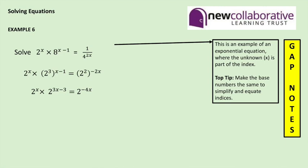Now the left hand side of the equation can be simplified further. Because we now have 2 to the power x multiplied by 2 to the power 3x minus 3, and both of those have the same base number, we can add the indices together and simplify the left hand side to 2 to the power 4x minus 3. And that's equal to 2 to the minus 4x.